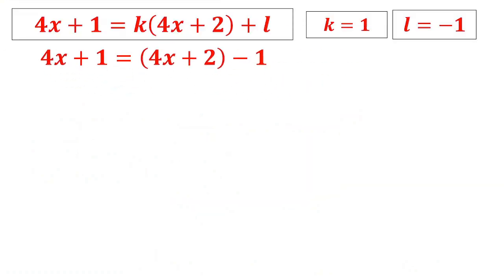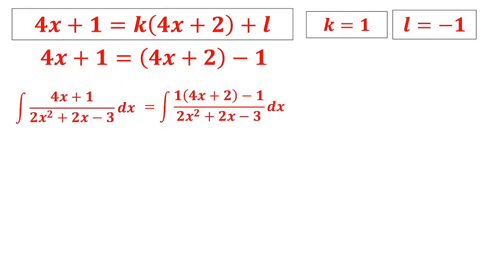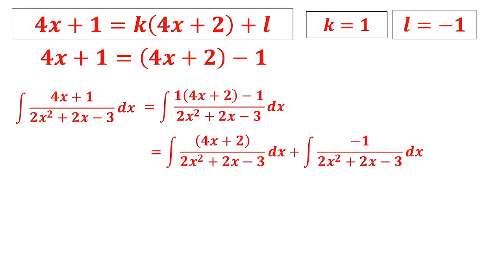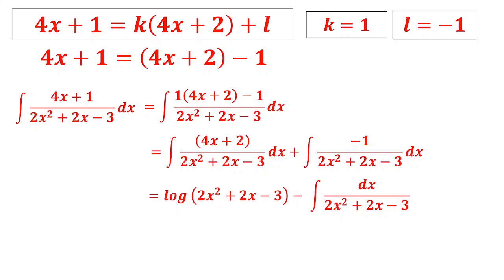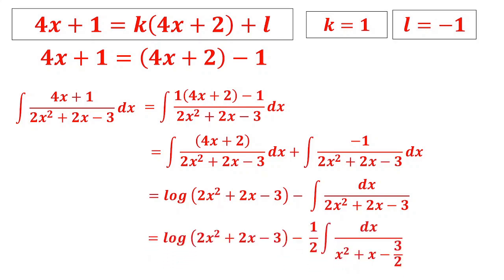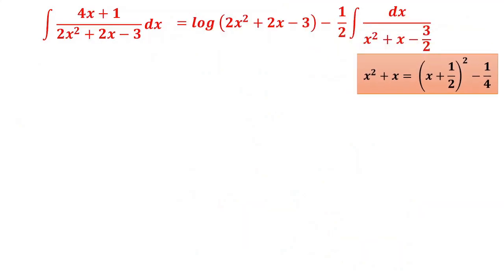Check: 4x+2−1 = 4x+1 ✓. Put in the integral: ∫(4x+2)/(denominator)dx − ∫1/(denominator)dx. The first integral is log(2x²+2x−3). For the second, take 2 outside: −(1/2)∫dx/(x²+x−3/2). Write x²+x = (x+1/2)²−1/4, giving (x+1/2)²−1/4−3/2 = (x+1/2)²−7/4.